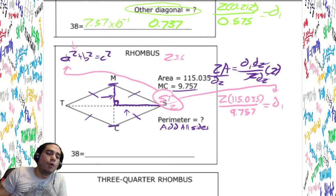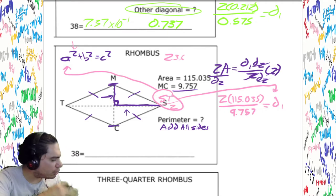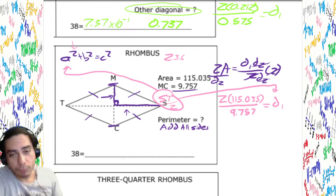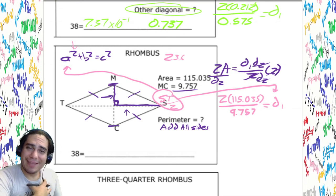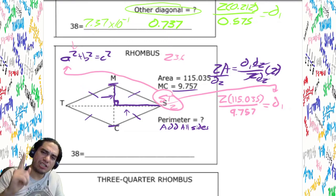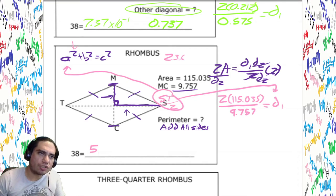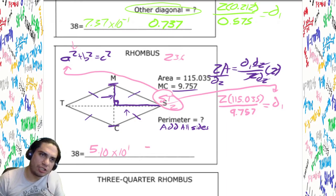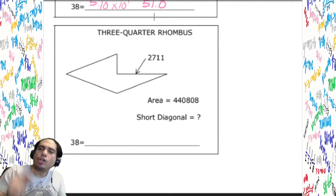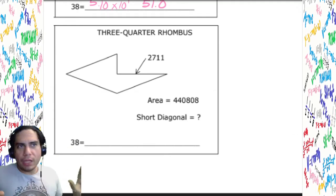Now we take the square root of 1.63 times 10 squared, and we get 12.8 — that's one side of this rhombus. But remember, all sides of a rhombus are congruent — just like a square. So we take 12.8 times 4, and that gives us our perimeter: 5.10 times 10 to the first, or 51.0.